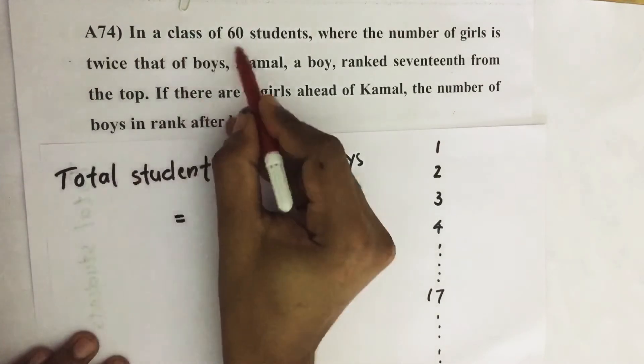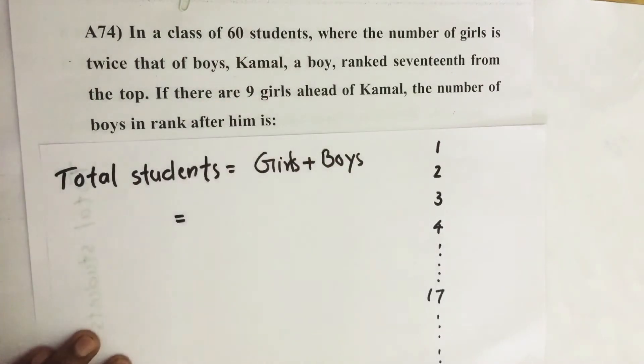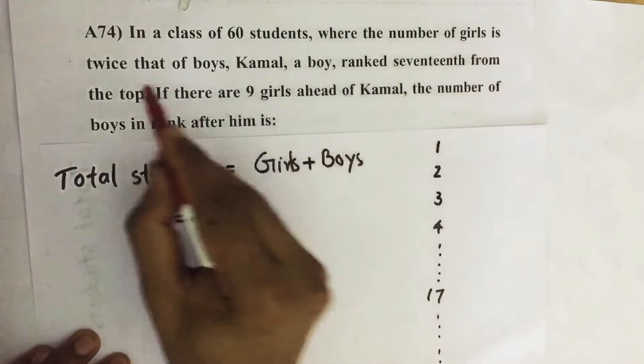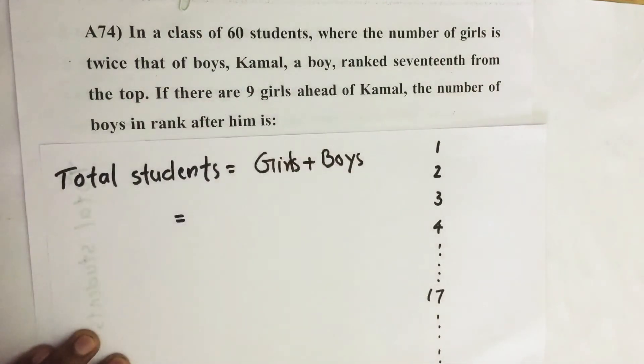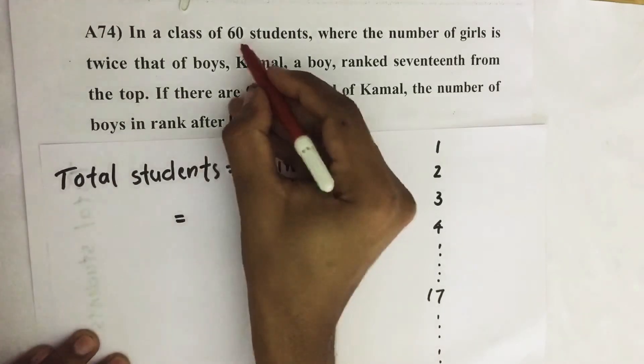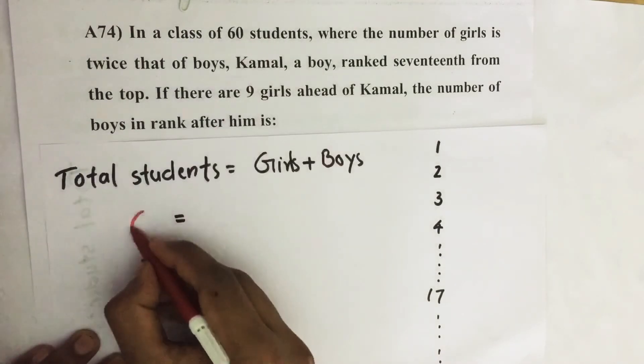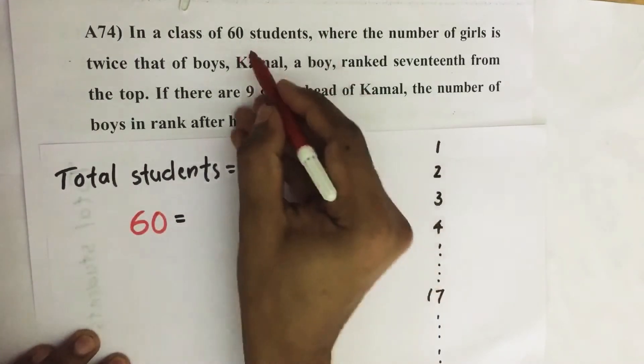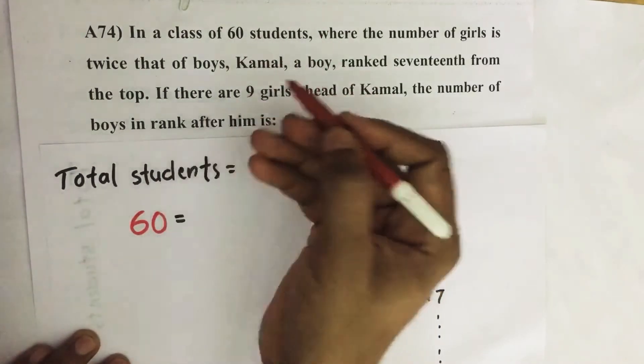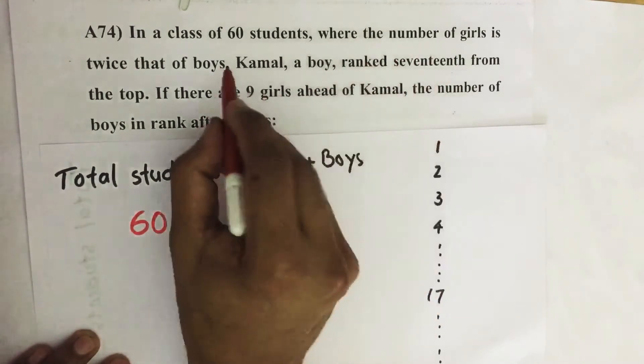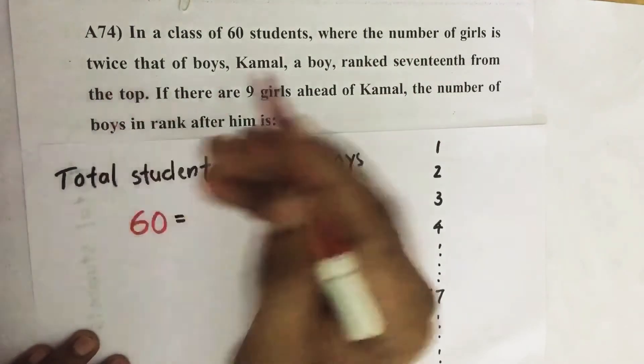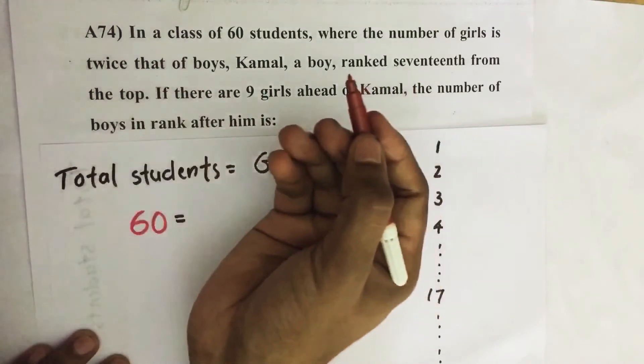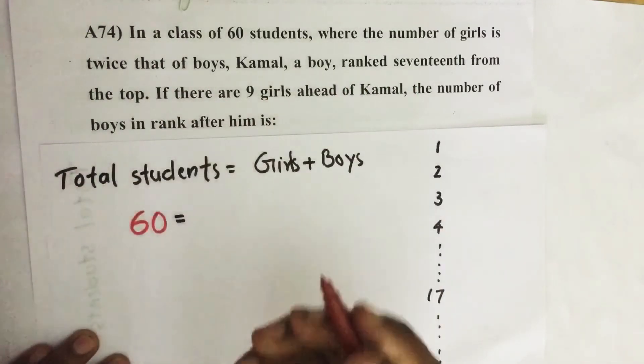So in a class there are 60 students, then the number of girls is twice that of boys. So total students equal to 60, then we can easily say boys equal to 20, and girls equal to 40. The number of girls equal to twice that of boys. If boys is 20, girls equal to 40 and 20 plus 40 equal to 60.